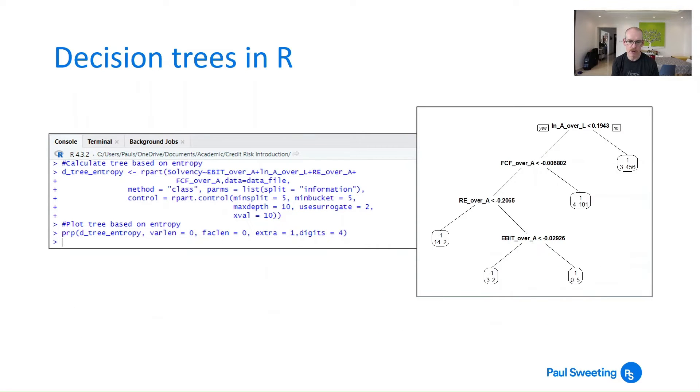So run that and you end up with this decision tree here which starts on log of assets over liabilities then moves through to free cash flow over assets, retained earnings over assets and EBIT over assets. If you want to go back to the last video I did you'll notice that the numbers in here are gratifyingly exactly the same as the numbers that I managed to get through Excel which I was both pleased and surprised at. My fairly clunky Excel approach which did take me considerably longer than doing in R did work.